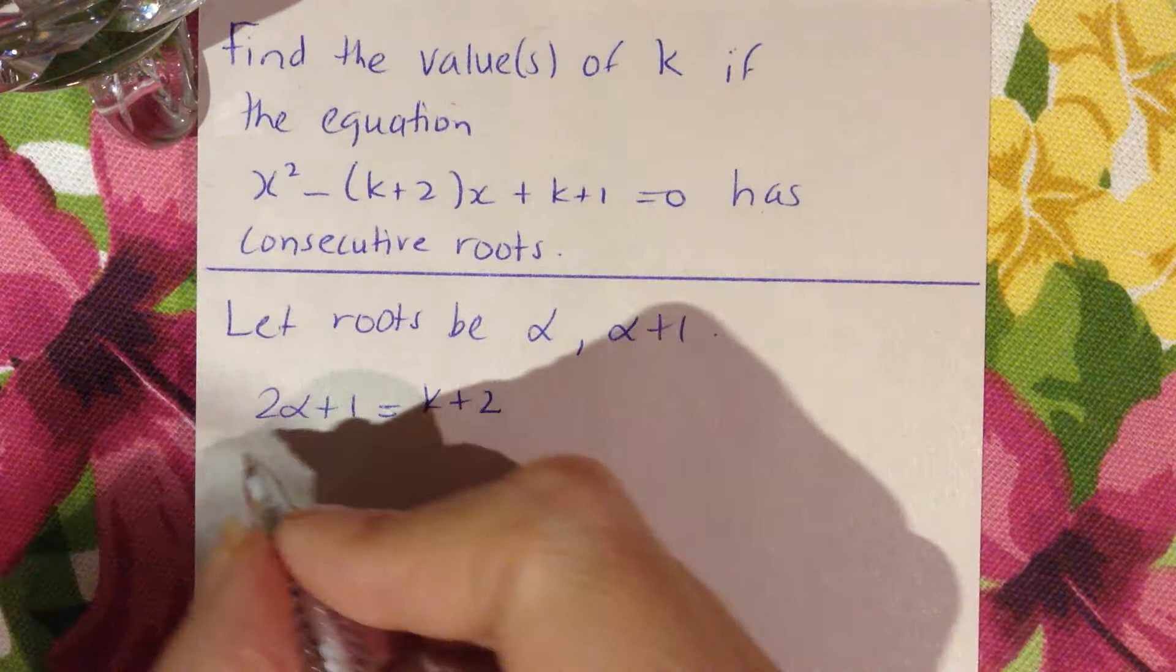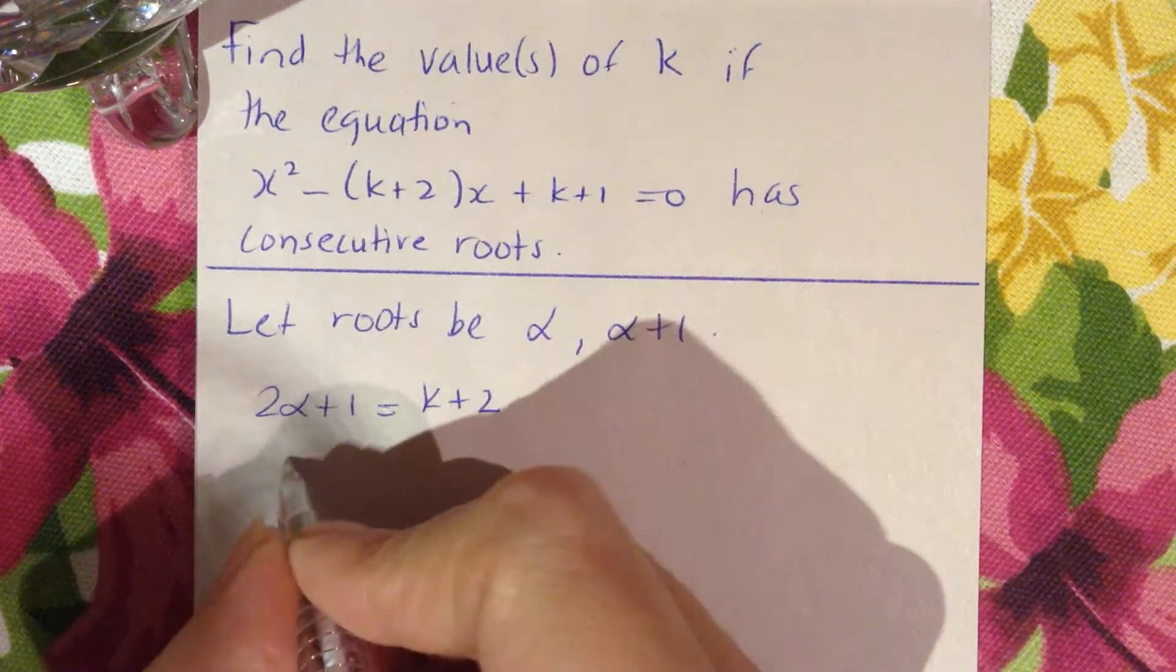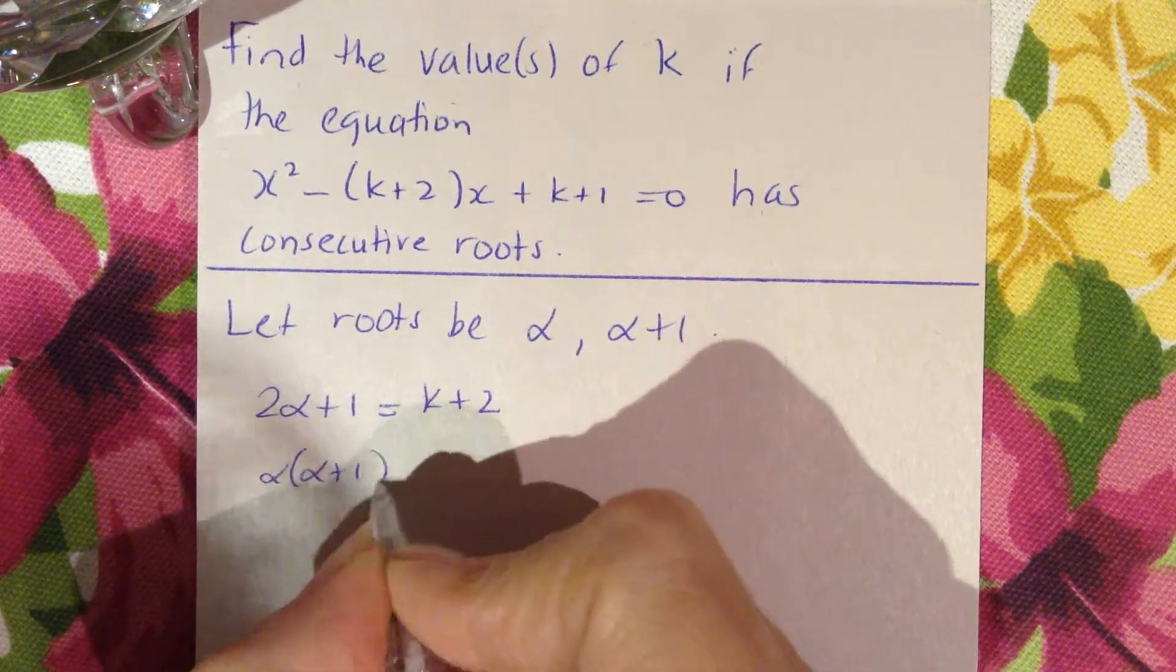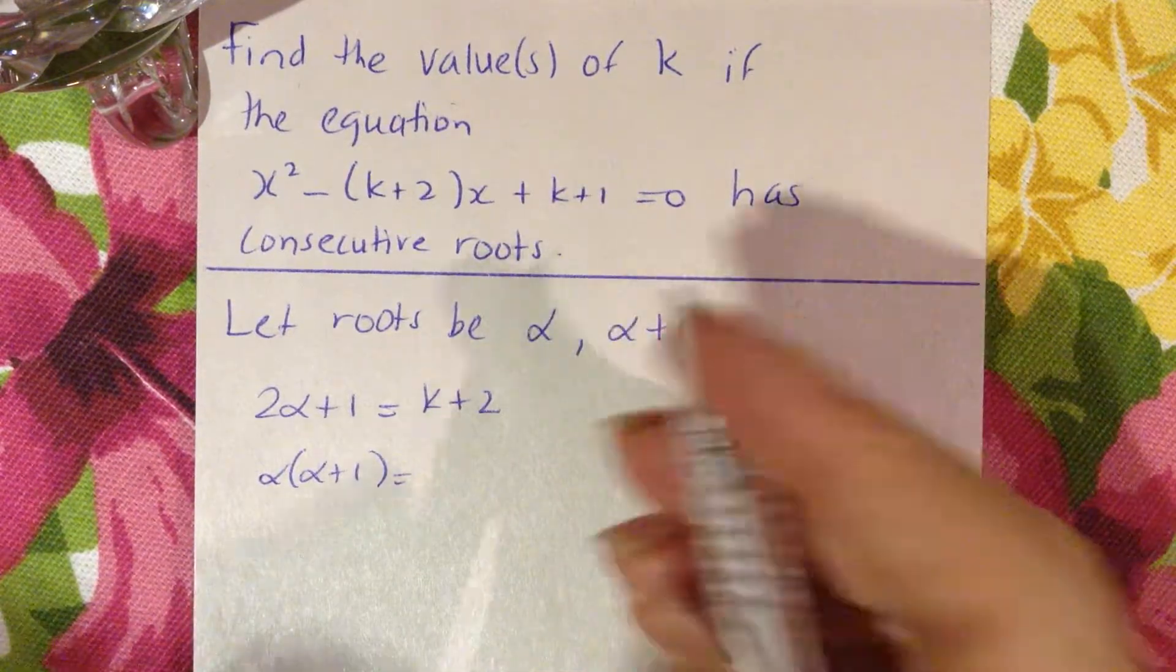The product of the roots will be α times α+1 equals c/a, so it'll be (k+1)/1.